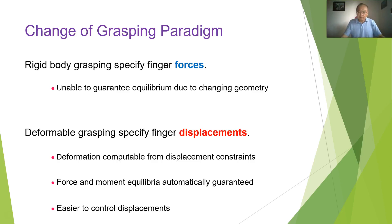So rigid body grasping, basically we specify forces to achieve and then check, this is going to be an equilibrium grasp, or a grasp that can resist an adversary range. But for deformable objects, because its geometry is changing, you can no longer generate equilibrium by specifying forces, and the forces will have to change.